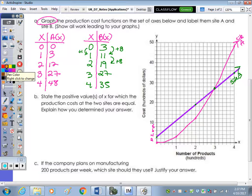So part B says to state the positive values of X for which the production costs at the two sites are equal. So I want them to have the same cost, which is your Y. The point where both graphs share the same Y is the point of intersection. So that's an X value of 3.